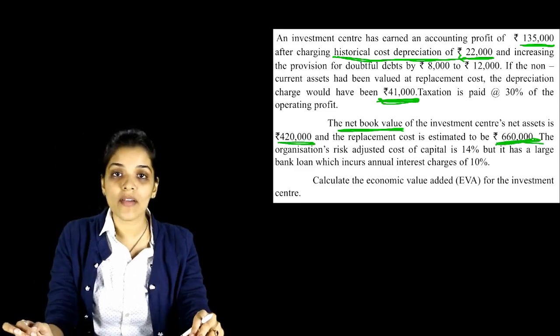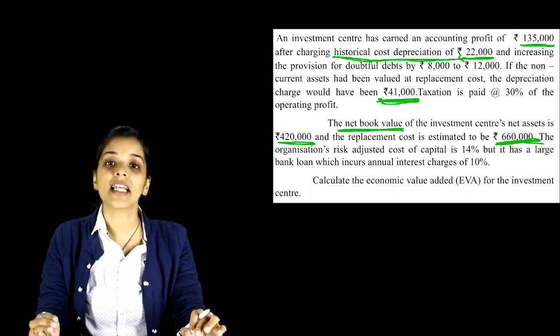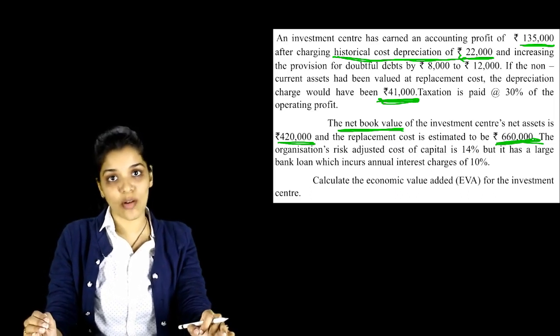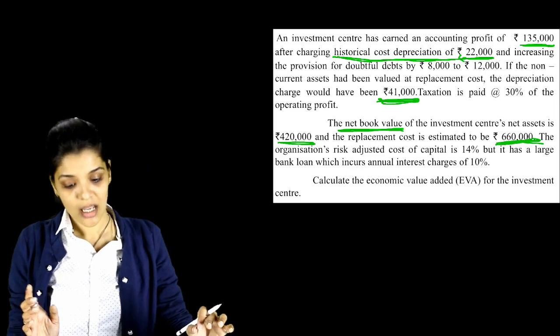So which value will we take for non-current assets? 6,60,000 — because we need to take replacement cost. We will not take net book value or historical cost.